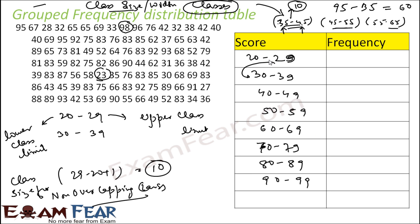There is no fixed rule for class size. We could have taken 20 to 24 and then 25 to 29 — it is all our call. We have to decide what class size to take. There is no rule saying it has to be a specific size. We can make it shorter or bigger. We can even take 21 to 25, 26 to 30. There is no hard and fast rule, except that in this case the classes are non-overlapping.